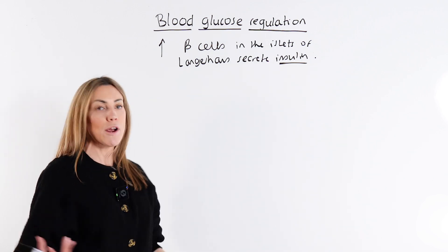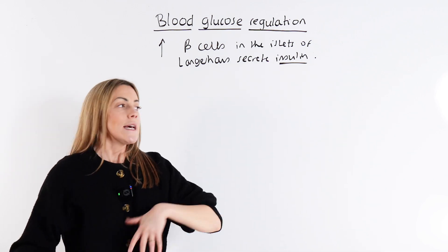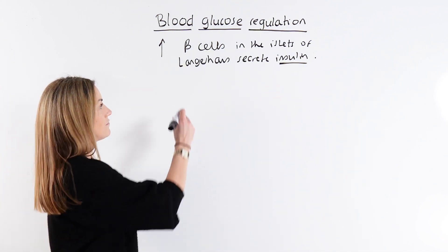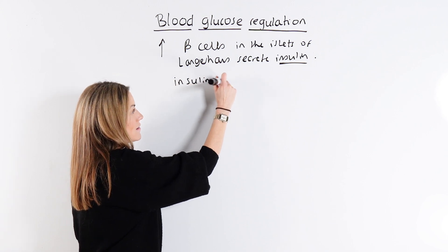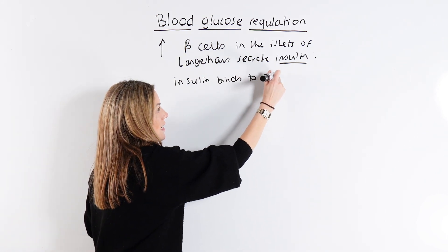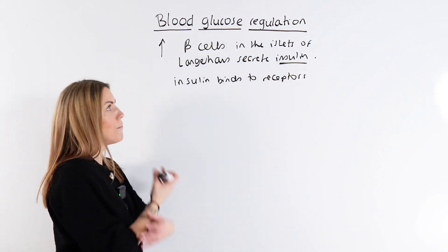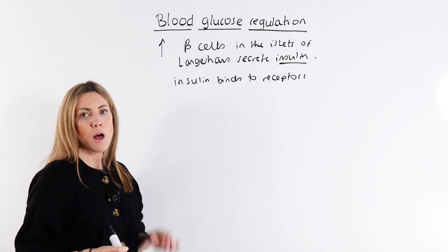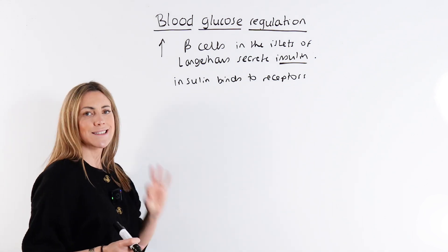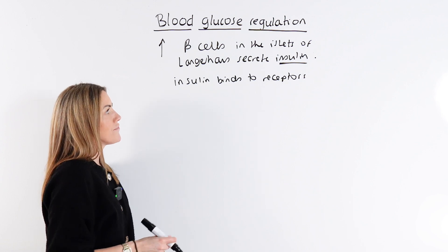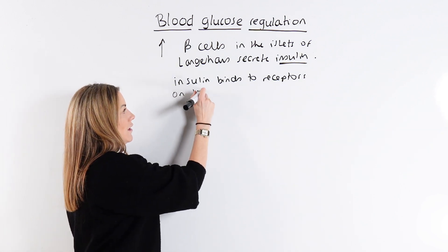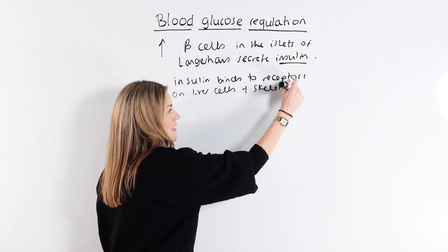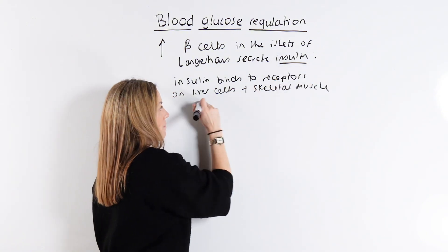Insulin is a hormone that's made out of protein. It's going to travel in the bloodstream as a chemical messenger and bind to its receptors. There are receptors for insulin on many different tissues, but the ones we focus on for A-level are the liver cells — called hepatocytes — and the skeletal muscle cells.